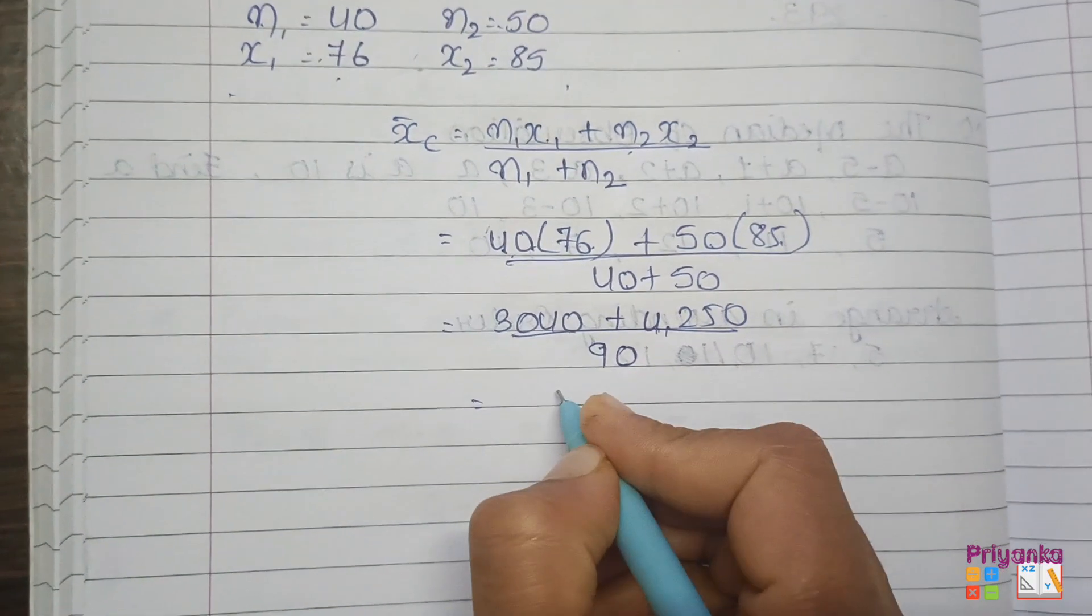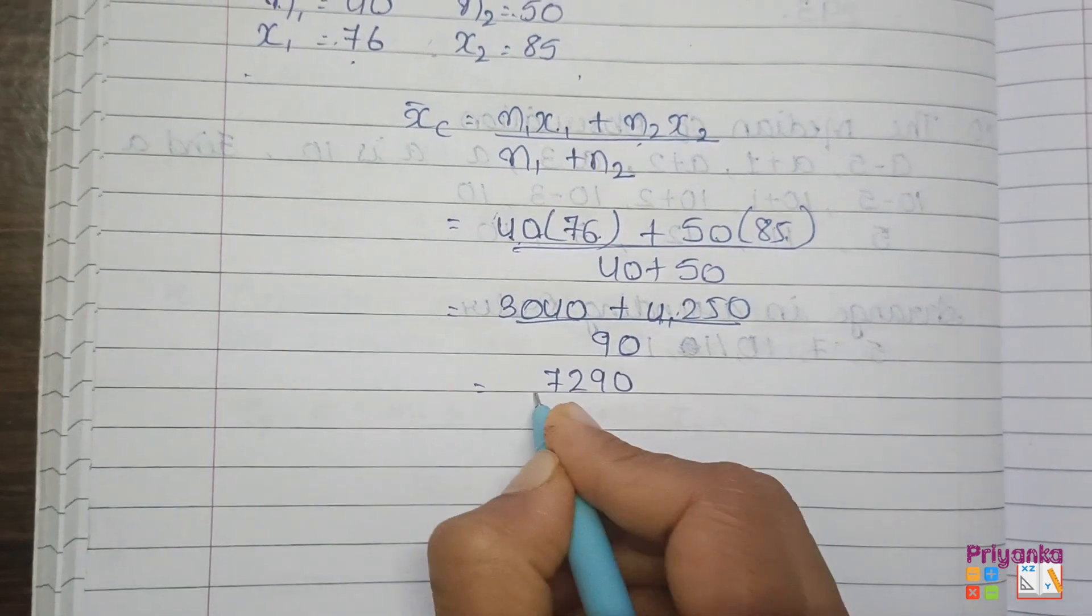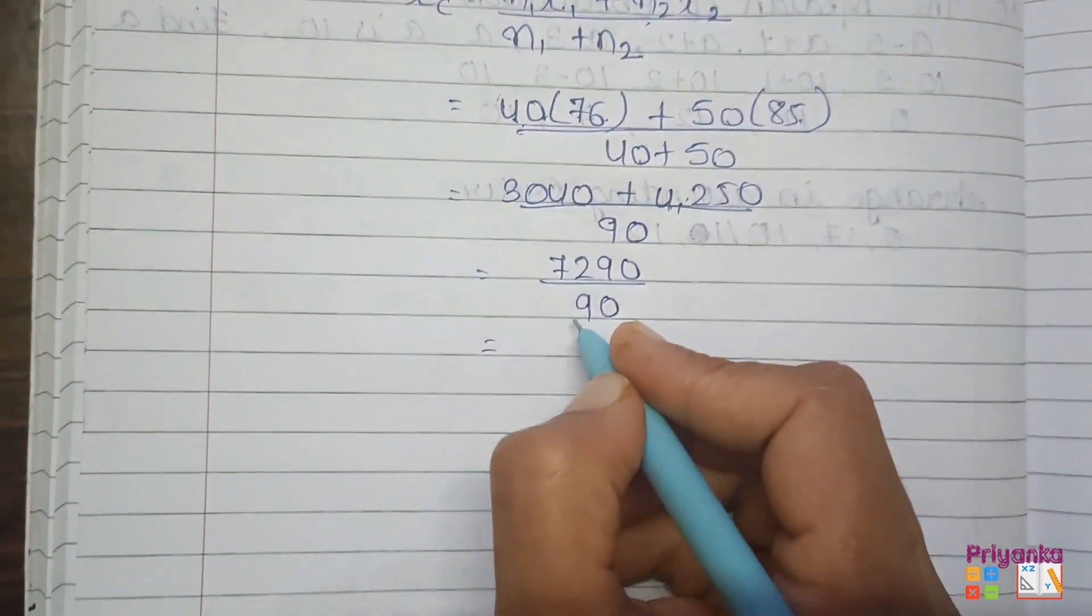Plus 50 into 85 is 4250, divided by 40 plus 50 is 90. Now just add them. Here we get 7290 by adding these two numbers, divided by 90. Here we get the answer 81 marks.